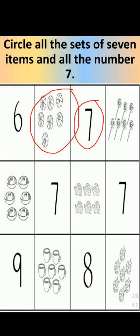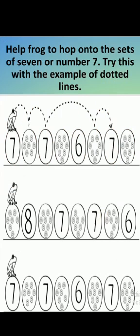Help frog to hop onto the sets of 7 or number 7. Try this with example of dotted lines. I have already given you the example in the first one. See, frog only wants to jump on number 7 items or number 7.